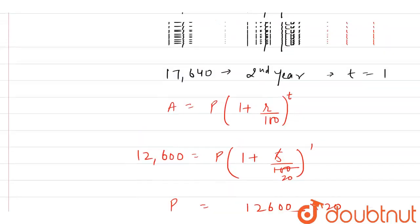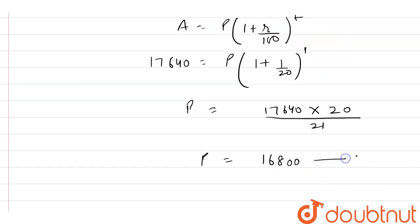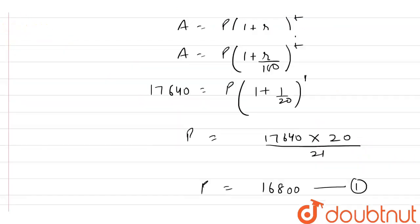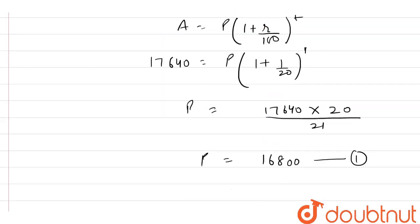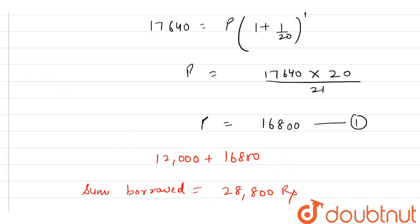So from the first case — the first year — the principal amount is Rs 12,000, and from the second case, the principal amount is Rs 16,800. The sum that Mohit borrowed is therefore 12,000 plus 16,800, which equals Rs 28,800. This is our final answer.